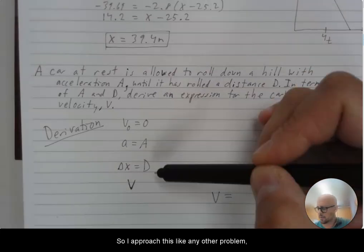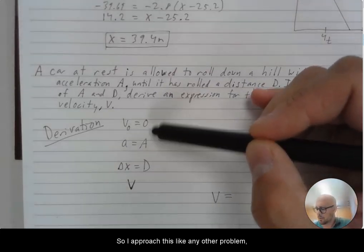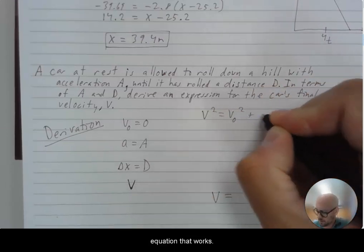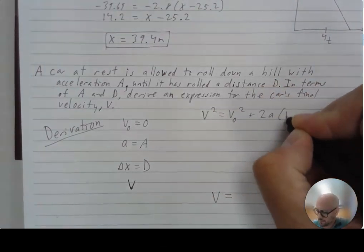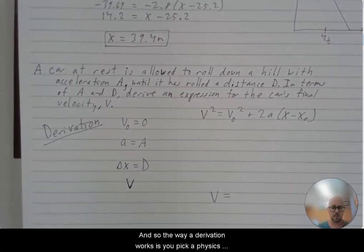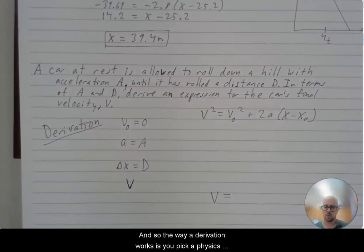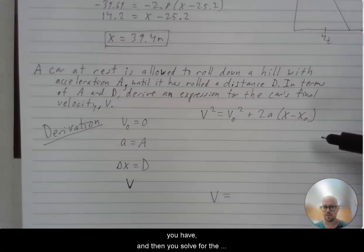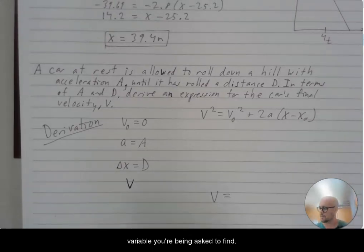So I approach this like any other problem and I look at my variables and I have one kinematics equation that works. And so the way a derivation works is you pick a physics equation or two, you plug in the values that you have, and then you solve for the variable you're being asked to find.